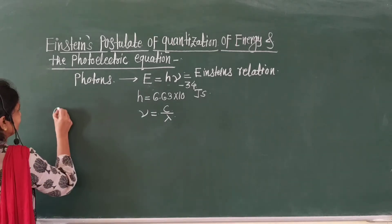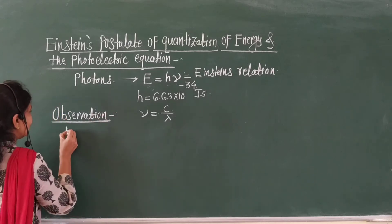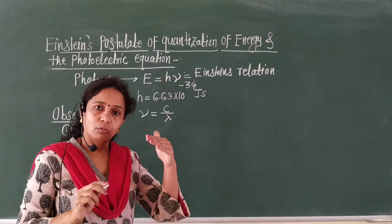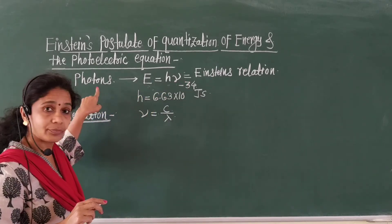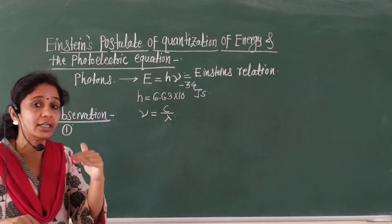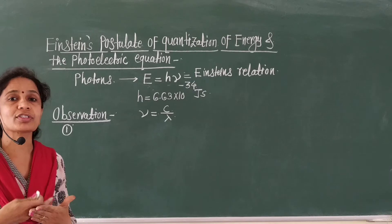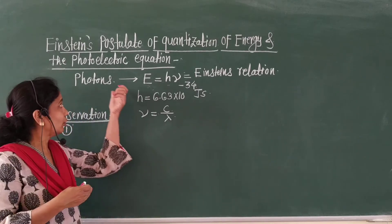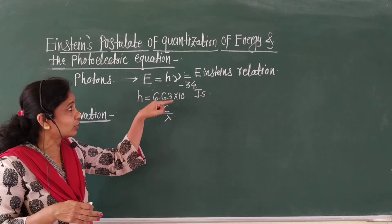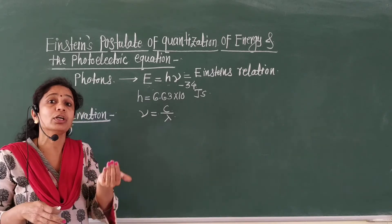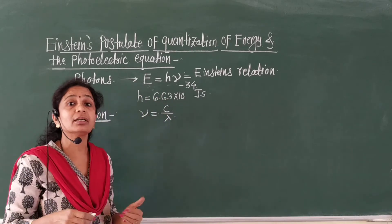Now, observations. There are a total of 8 observations. First observation: when ultraviolet radiation, which now consists of photons, is incident on the emitter plate, there are collisions between photons and electrons. Light radiation consists of photons and the emitter plate consists of electrons. The energy of each photon, E = hν, is absorbed by the electrons. All the energy of the photons is absorbed by the electrons.